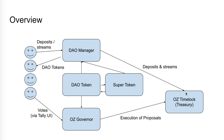Here's a brief overview of how everything is set up. The DAO Manager acts as a front-end interface that accepts deposits or streams and in return sends back DAO tokens to contributors. It forwards those deposits and streams to the OpenZeppelin TimeLock or Treasury contract. The DAO token is an ERC-20 token that supports voting and works with the OpenZeppelin Governor contract, which DAO members can interact with via the Tally UI. Tally provides a front-end UI for creating proposals, voting on proposals, and executing passed proposals.